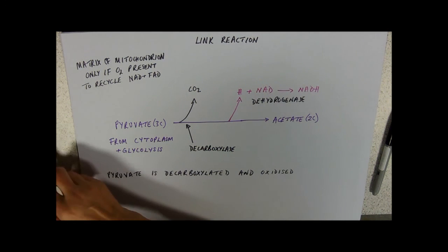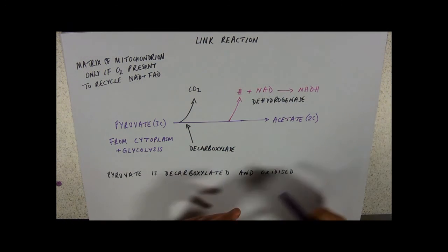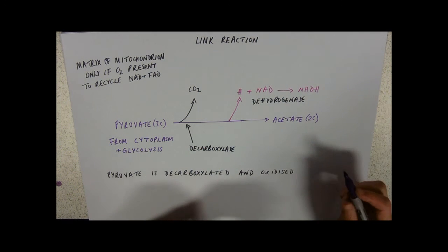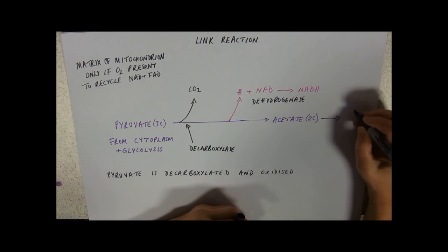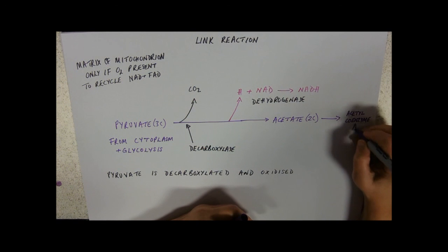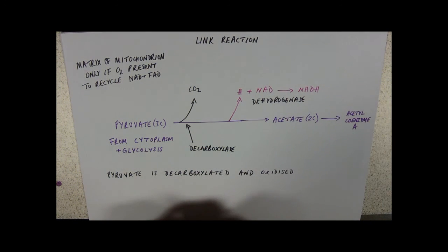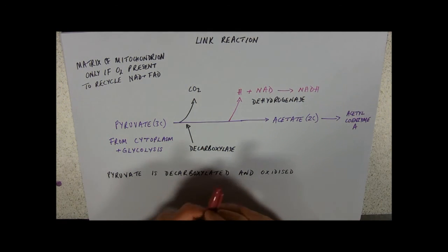That's not the end of the story because to get into the next series of reactions on Krebs cycle, acetate needs a bit of a helping hand. It joins to a coenzyme. And the coenzyme it joins to is coenzyme A.